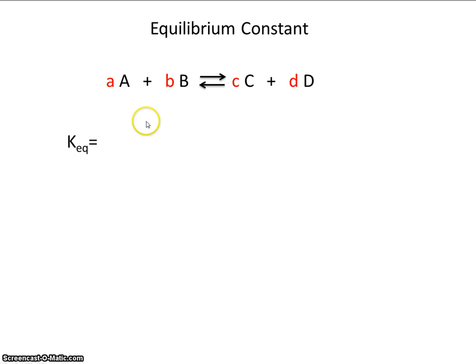We have a formula to help us. The K-E-Q, that's the equilibrium constant. It's equal to the concentration of the products divided by the concentration of the reactants.